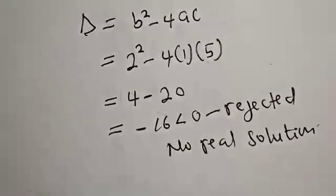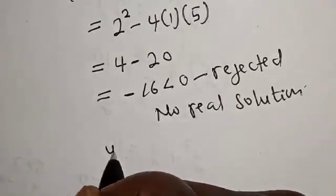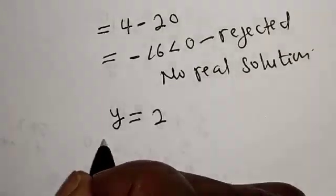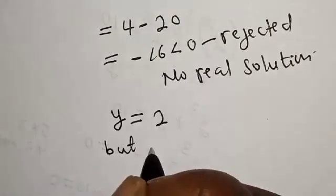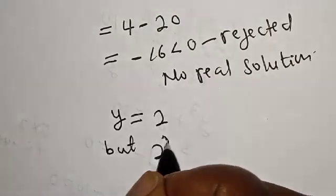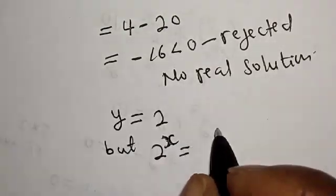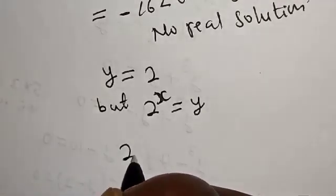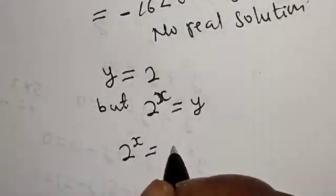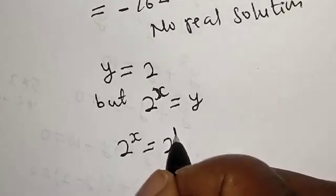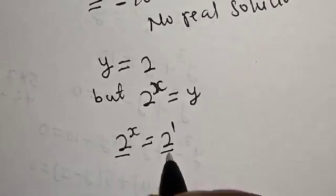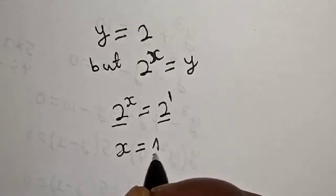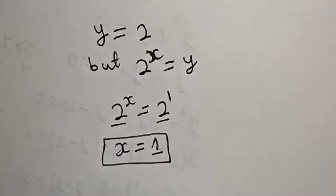The only real solution we have is y equals 2. But 2 raised to power s equals y, so 2 raised to power s equals 2, which is also 2 raised to power 1. They have the same base, therefore s is equal to 1. And that is our final answer.